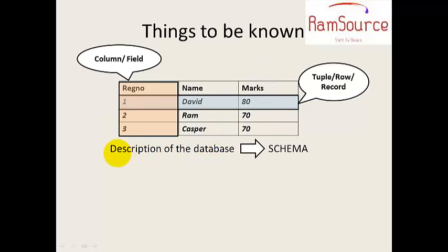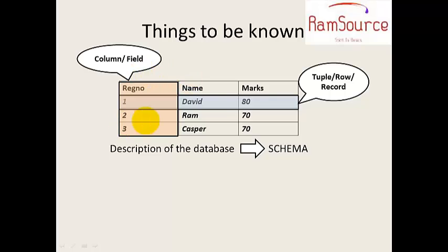The schema is a description of the database structure. In the database, the column names, marks, fields, and data types describe the schema. The structure of the database is the schema.